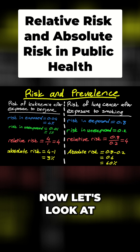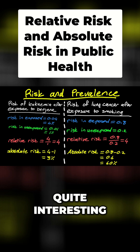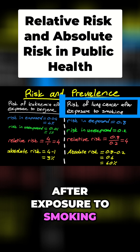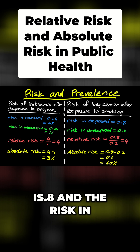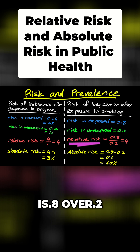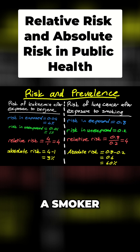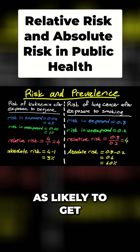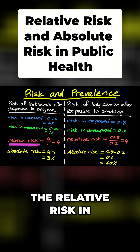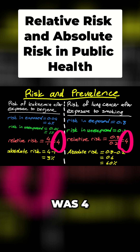Now let's look at another example that's slightly different — it's going to illustrate something quite interesting. This is the risk of lung cancer after exposure to smoking. The risk of the exposed is 0.8 and the risk in the unexposed is 0.2, so the relative risk is 0.8 over 0.2, which is 4. If you're a smoker, you are four times as likely to get lung cancer. Interestingly, the relative risk in both examples was four.